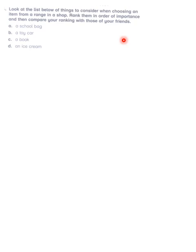For an ideal student, the best economic choice should be: first, the book; then a school bag to keep books safe; then an ice cream; and lastly, the toy car. Your friends may have different choices — some may want a toy car first, or prioritize ice cream, and put the book last. Some may also spend too much money on a school bag, leaving very little for books, which is not a good economic choice. My suggested ranking is: A) book, B) school bag, C) ice cream, D) toy car.